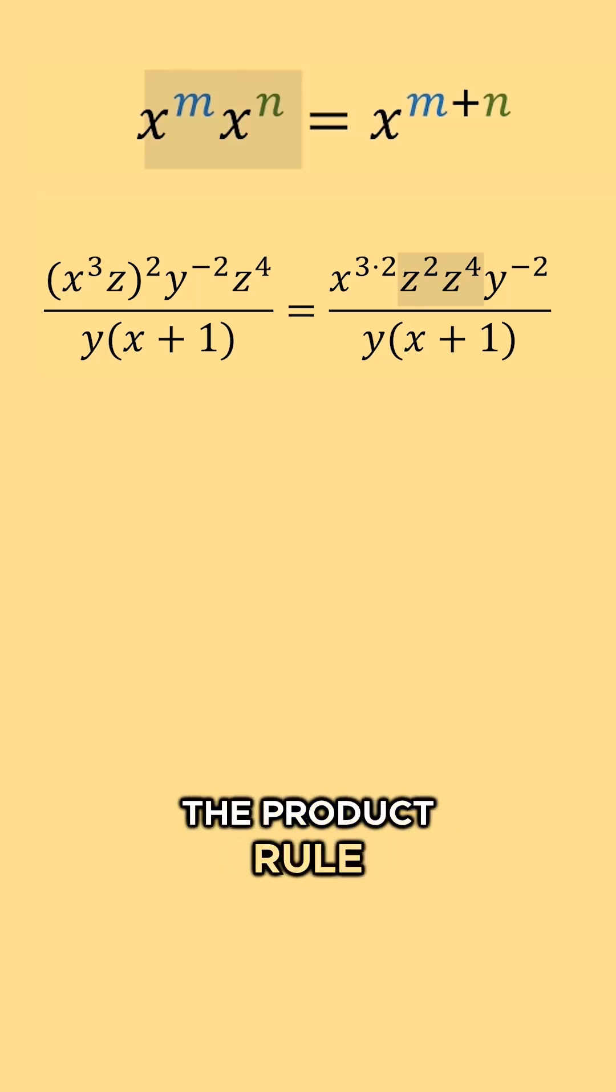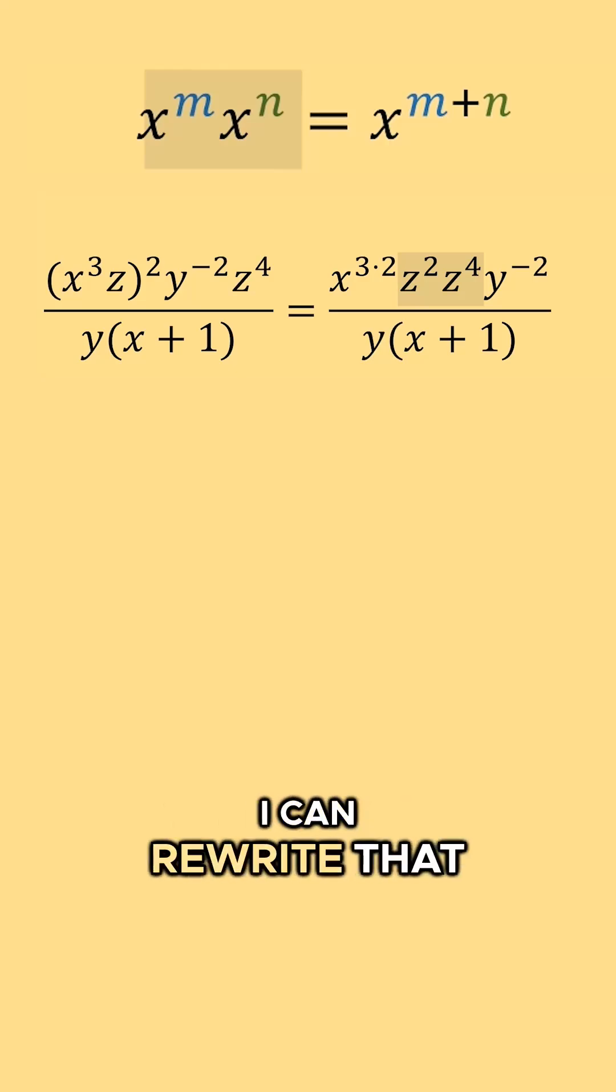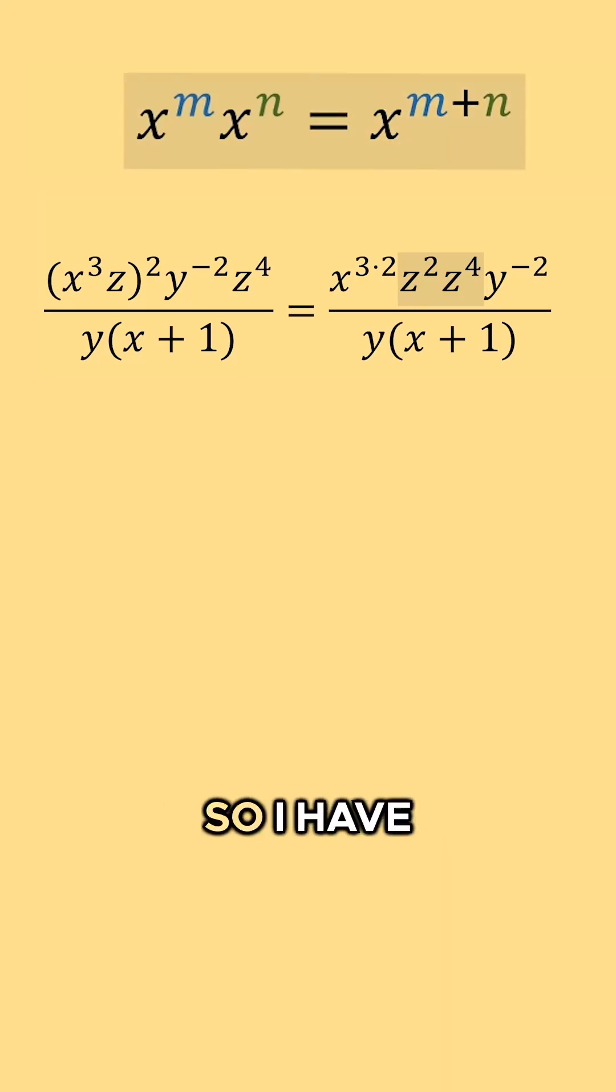And that is if I have a variable raised to a power times a variable raised to another power, I can rewrite that as the variable raised to the sum of the two powers. So I have z to the second times z to the fourth, and I can rewrite that as z to the two plus four, which is z to the sixth.